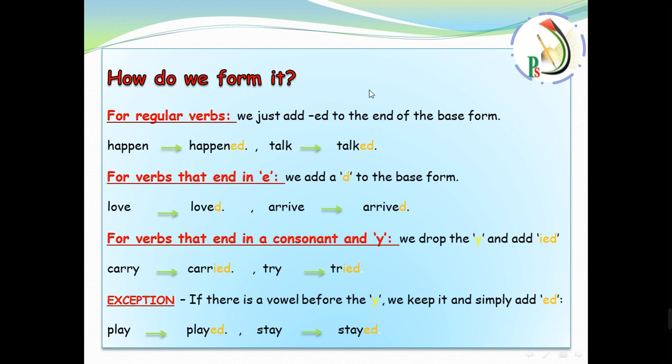How do we form it? We have some rules. You can pause the video if you want to write them down. For regular verbs, we just add -ed to the end of the base form. Happen? Happened. Talk? Talked. Walk? Walked. Wash? Washed. Just add -ed to the verb and we call this type of verbs regular verbs. Verbs that followed with -ed to change them to the past. They are the regular verbs. Happened, talked.